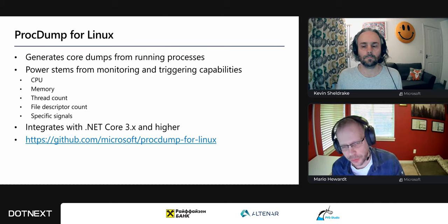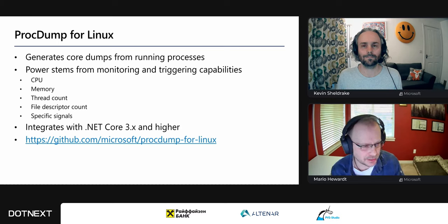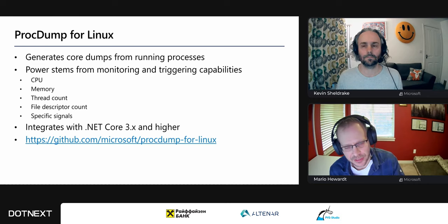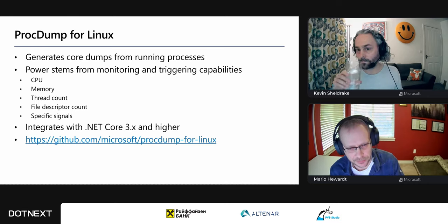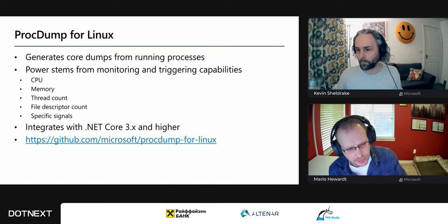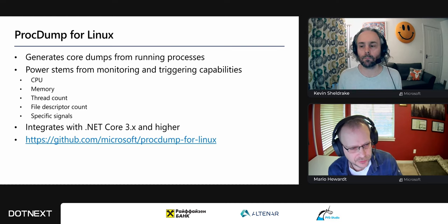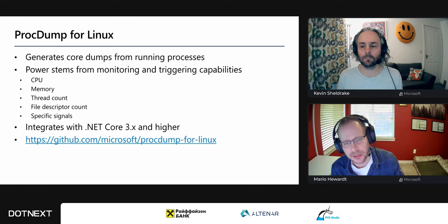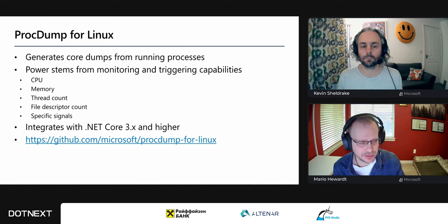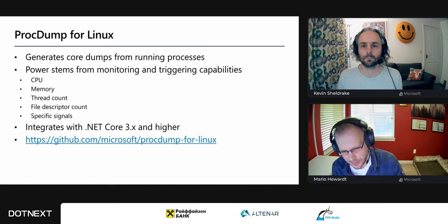For example, if your process spikes CPU to 95% once every three days, you can tell procdump to monitor that process and automatically generate a core dump when it reaches that threshold. About six to eight months ago we added .NET Core integration. When you generate a core dump on Linux for a .NET app, the runtime pre-allocates a lot of memory, so dumps can become very large.